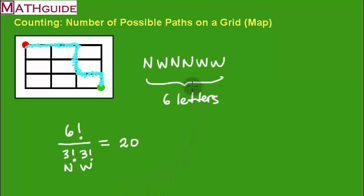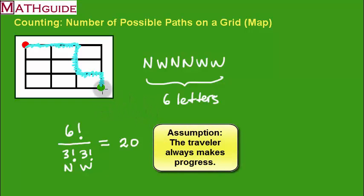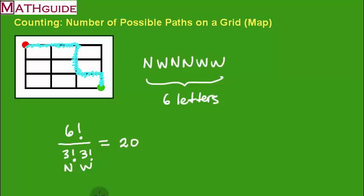So that takes into account all the possible scrambled-up versions of this. Now, of course, there is assumption going on here when you do these path problems. The assumption is you're always making progress towards your destination. We're not going to go on infinite loops where we go north, west, south, east, and keep going in a path like that. Otherwise, there would be an infinite number of possibilities if you keep on going on distracted tours. So to count the total number of paths when you're always making progress is the strategy.